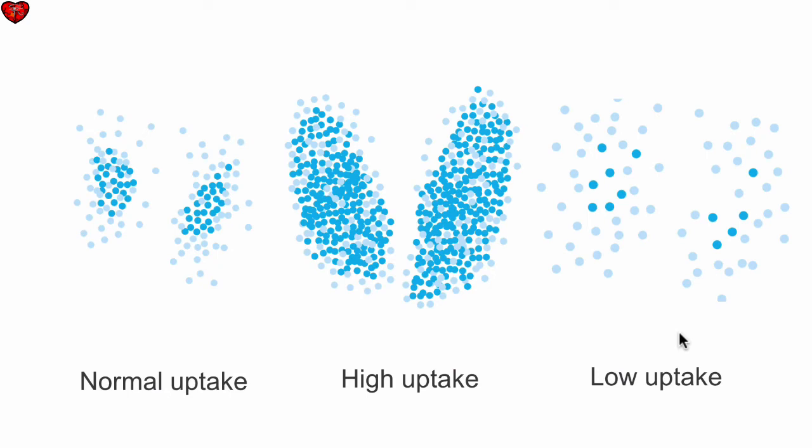Conversely, if the thyroid is damaged or suppressed for other reasons, it's not making very much thyroid hormone, so it doesn't need very much iodine. The uptake will actually be quite low.